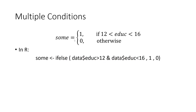The second variable, 'some' college, is a little different because there are actually two conditions — two inequalities. For someone to be in the some college group, that person should satisfy two conditions: education must be strictly greater than 12, and at the same time strictly smaller than 16. Both inequalities must be satisfied at the same time.